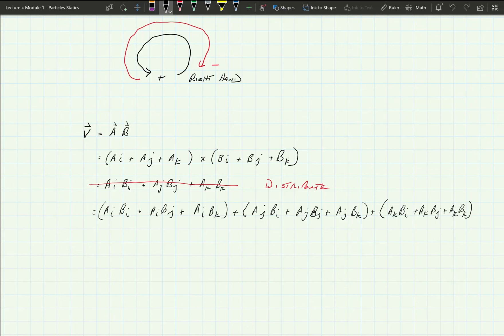All right, now let's remember some things from the last one. Anything that's multiplied times itself, so i times i is going to be 0. j times j is 0, k times k is 0.